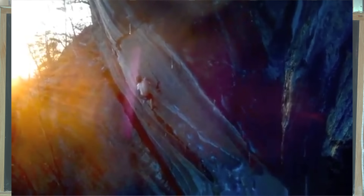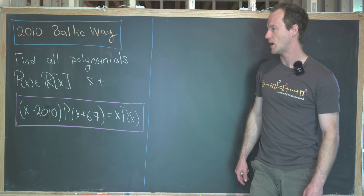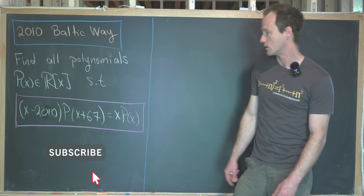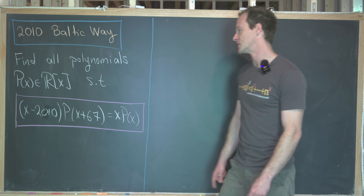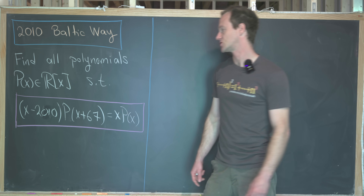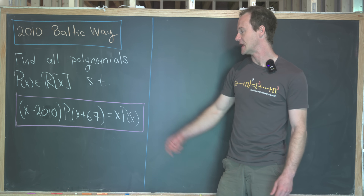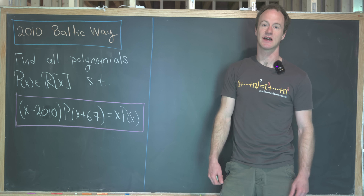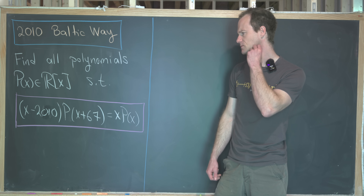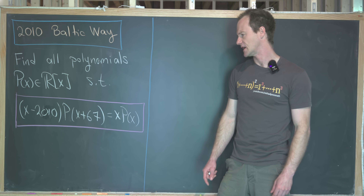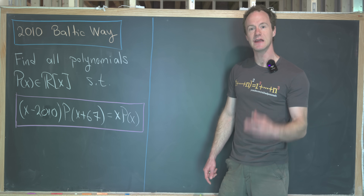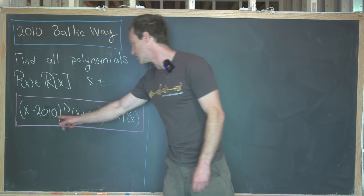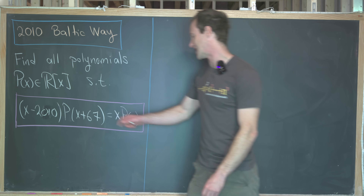So let's see our goal. We want to find all polynomials with real coefficients satisfying the following functional equation. We've got x minus 2010 times p(x + 67) equals x times p(x). Looking at this, we see immediately that there are two special numbers built into this: 2010 and 67.